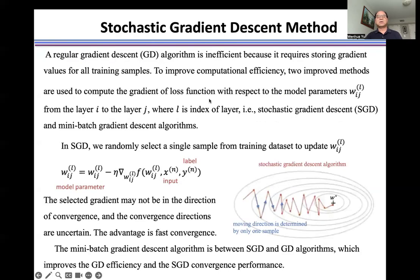A regular gradient descent algorithm is inefficient because it requires storing gradient values for all training samples. To improve computational efficiency, two improved methods are used.